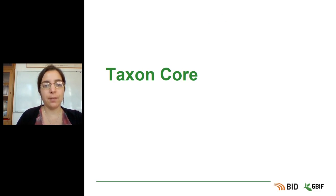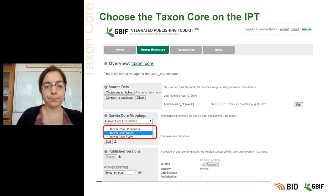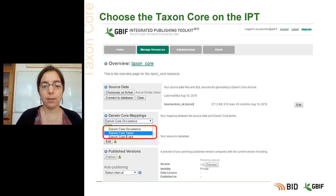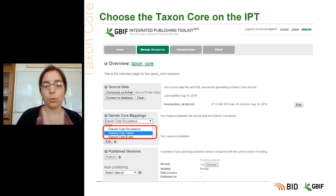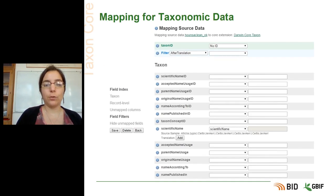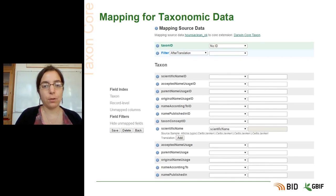There are different cores in the standard. If your data are more taxonomical, such as a checklist or red list, you can use the taxon core. On the IPT, you go back and select the Darwin Core taxon core instead of the occurrence core. Once you have selected this core, a mapping page appears with fields specific to taxonomic data, rather than occurrence data.